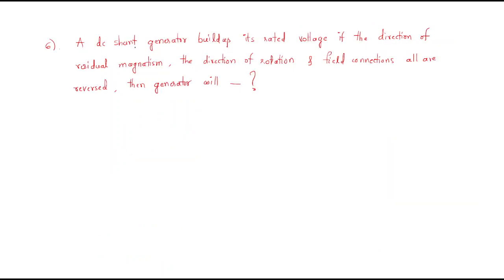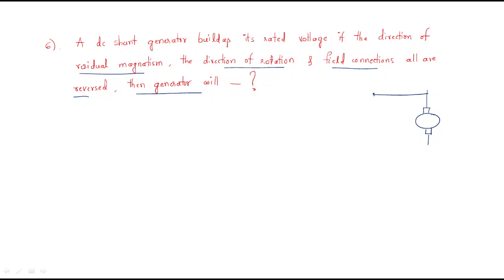Next problem: a DC shunt generator builds up its rated voltage. Now the direction of the residual magnetism, the direction of rotation, and the field connections — all three are reversed. We take the same generator setup where the field is arranged and the EMF is initially positive and minus, with the residual magnetism in a given direction.